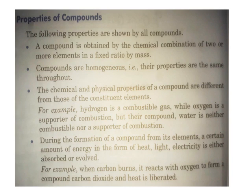Now let's look at the properties of compounds. A compound is obtained by chemical combination of two or more elements in a fixed ratio by mass. For carbon dioxide, the fixed ratio is 3:8. For water, the fixed ratio is 1:8. This fixed ratio is always maintained when forming a compound.